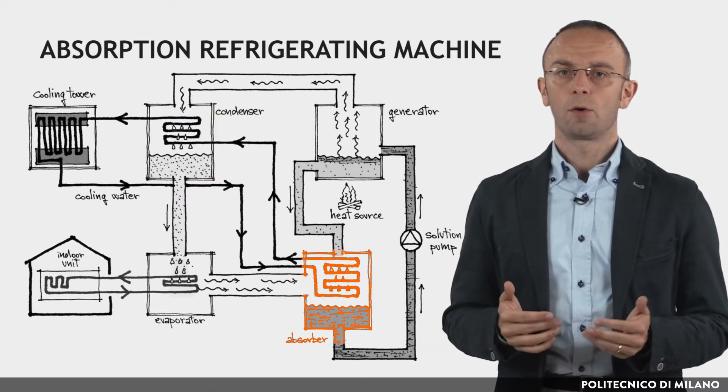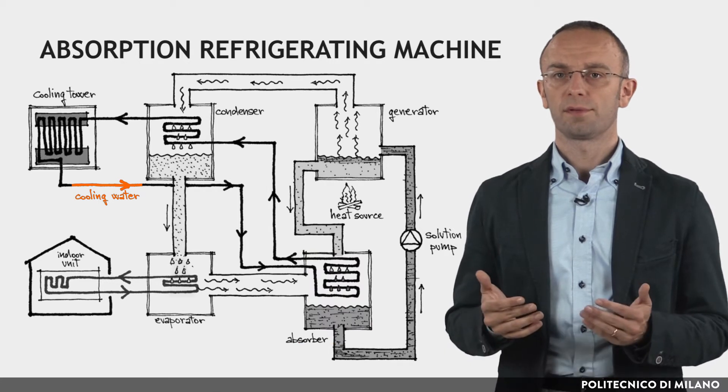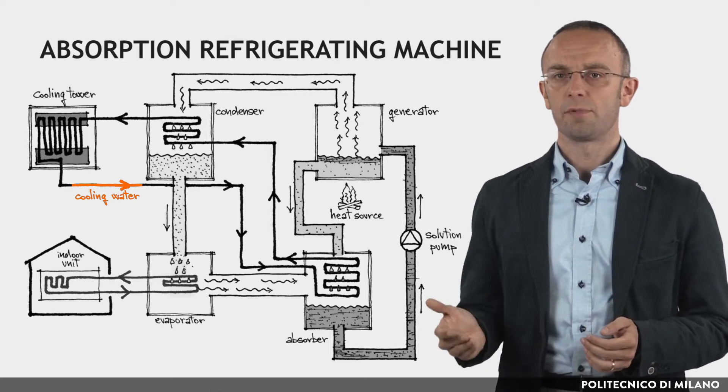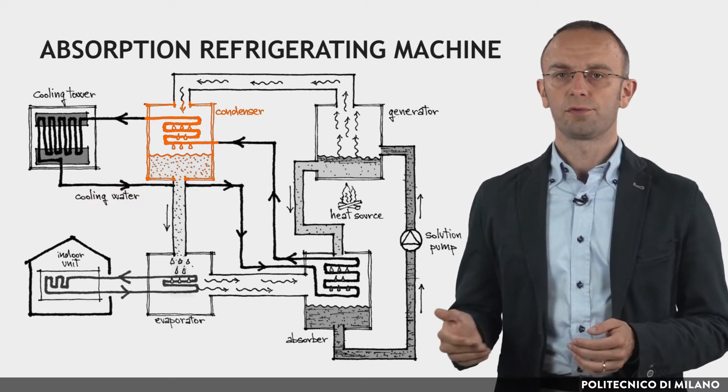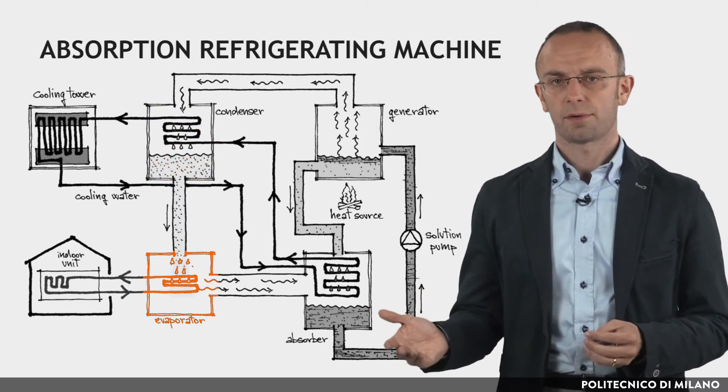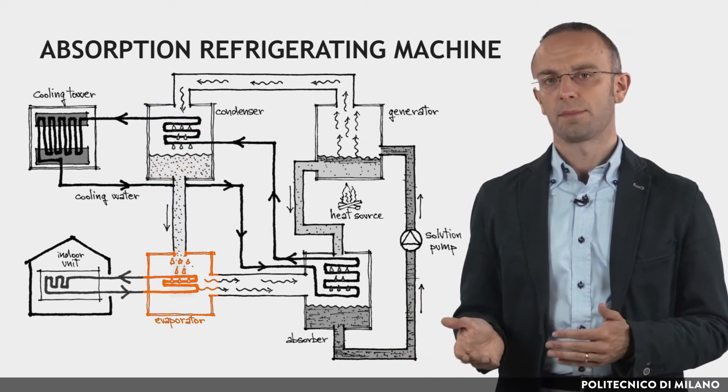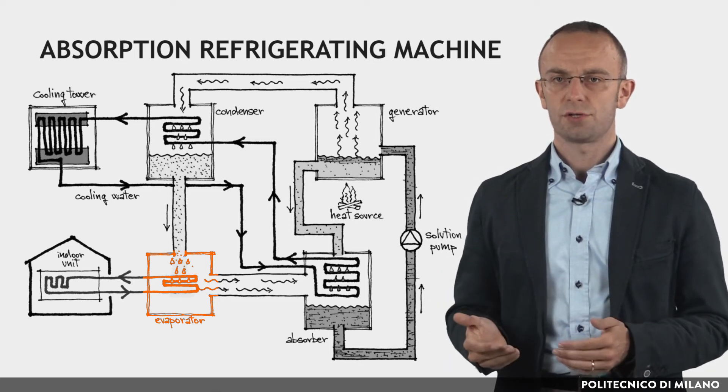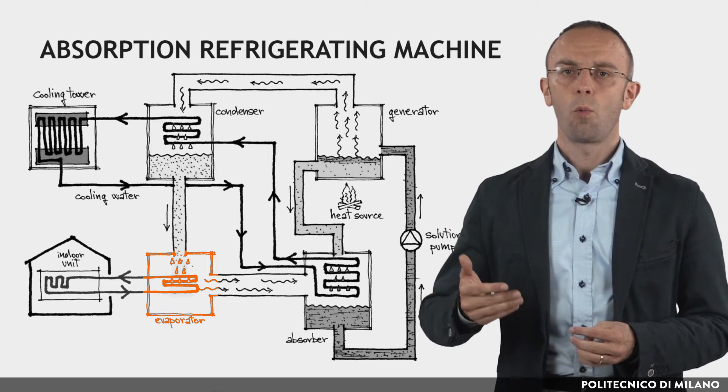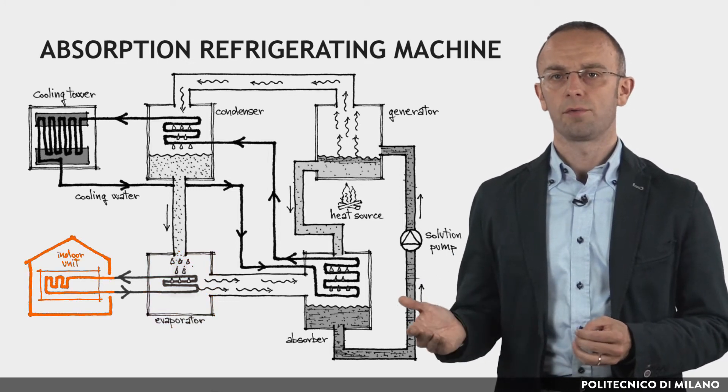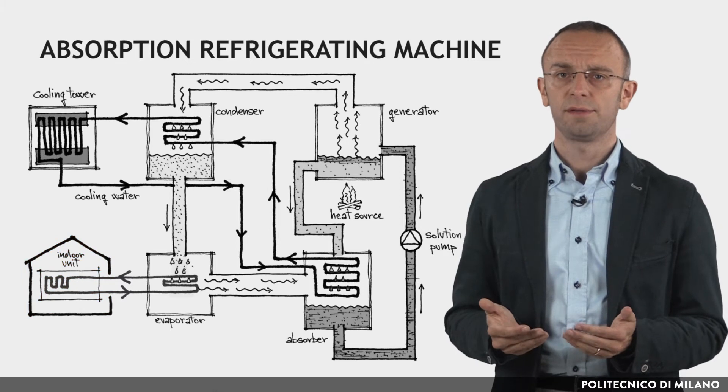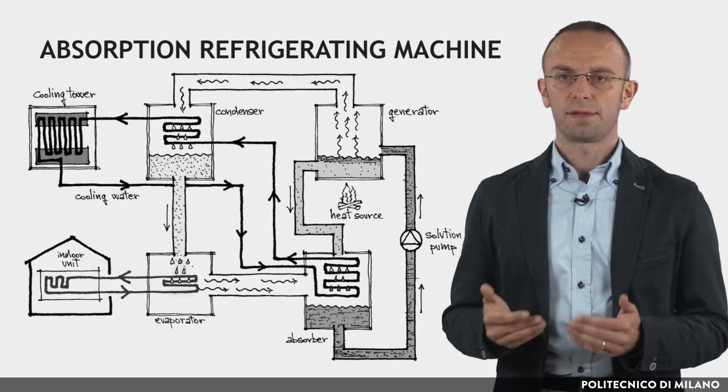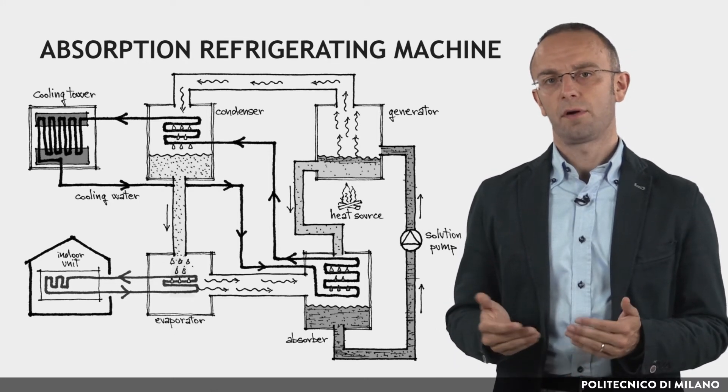In the condenser, the cooling water absorbs the condensation heat from the vaporized part of the solution changing into a liquid. The liquid refrigerant flows from the condenser to the evaporator, experiences a drop in pressure and temperature. It is thus sprayed on a heat exchanger through which the water to be chilled flows before reaching the indoor unit. The efficiency of the absorption machines is dependent on the temperature of the heat source. The higher the temperature, the higher the efficiency of the system.